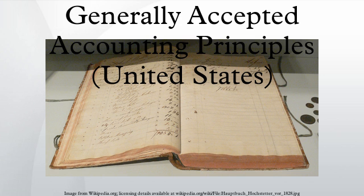The Monetary Unit Principle assumes a stable currency is going to be the unit of record. The FASB accepts the nominal value of the US dollar as the monetary unit of record, unadjusted for inflation. The Time Period Principle implies that the economic activities of an enterprise can be divided into artificial time periods.